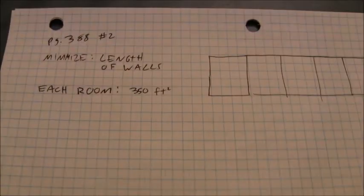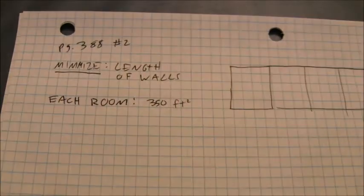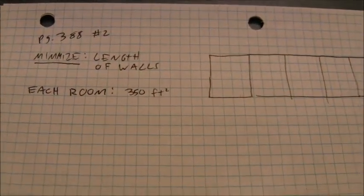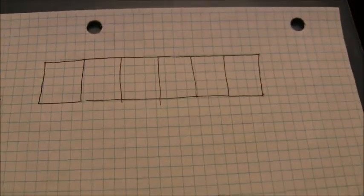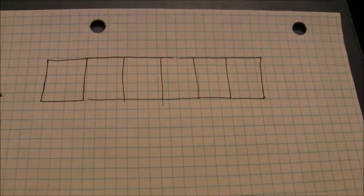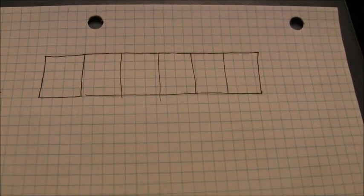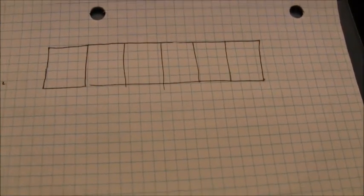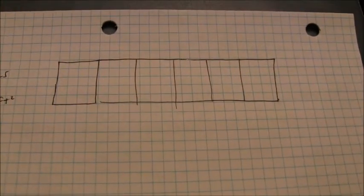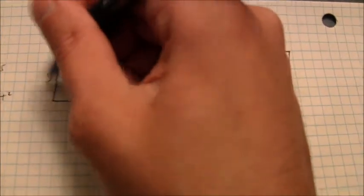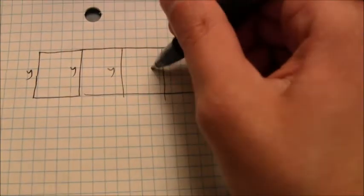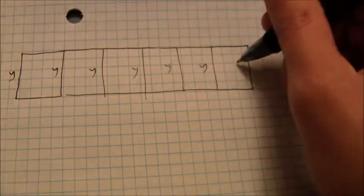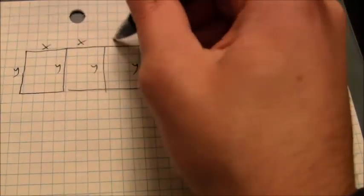So when you do these problems, first of all you want to figure out what needs to be maximized or minimized, and you want to write an equation for that. It's length of walls, so I need to find some way to describe that. These do not have to be square rooms, so I'm going to make these rooms have dimensions that are x by y. I'll use y for the vertical walls and x for the horizontal walls.